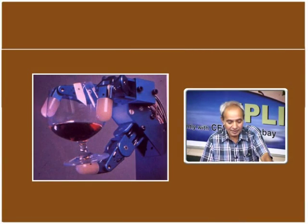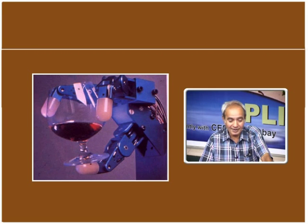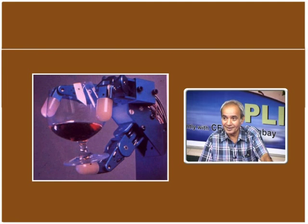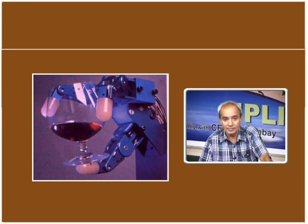This is the Stanford arm — you can see the whitish fingertips which are piezoelectric crystals. It is holding a wine glass; the glass is tilted and you get the feeling of a break in the glass. You can manipulate the glass by feeling the forces. The cable drives are here and the actuators are remote small motors which move forward and backward.